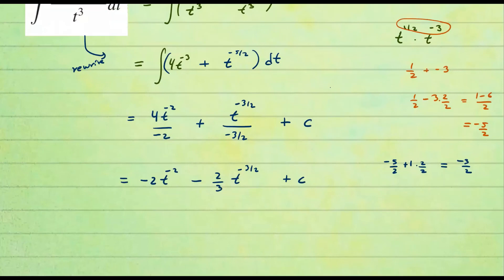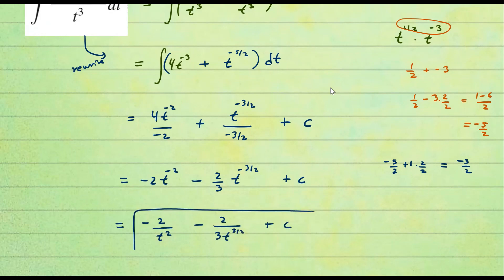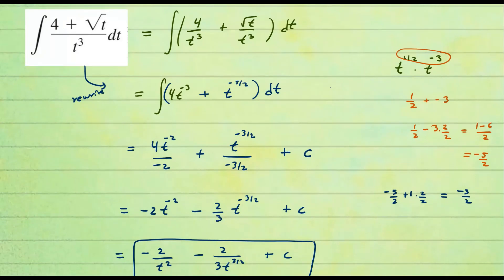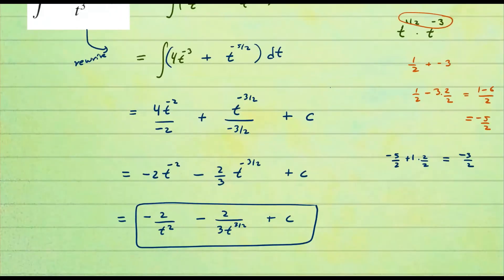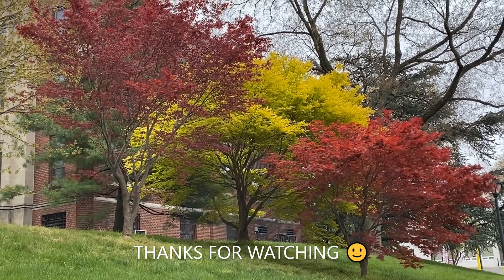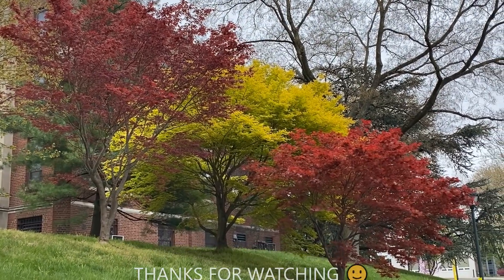Rewriting the negative exponents as positive by moving them to the denominator: the first term is negative two over t squared, the second term is negative two over three t to the three halves, plus C. That is our antiderivative for this function. Rewriting is very important — once it is in power form, apply the antidifferentiation rule.